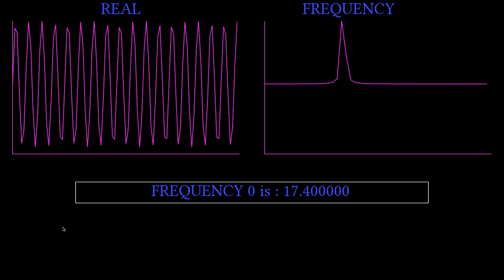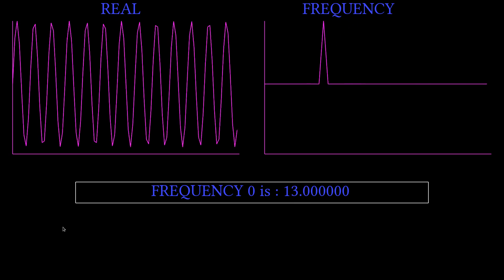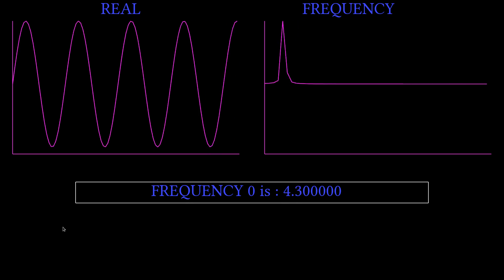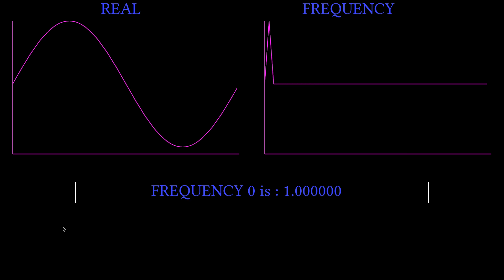At the same time, in frequency space, we will always see one defined peak, which is representative of the frequency of the wave. To me, this is already kind of cool. We can tell exactly what frequency we have simply by switching to frequency space.